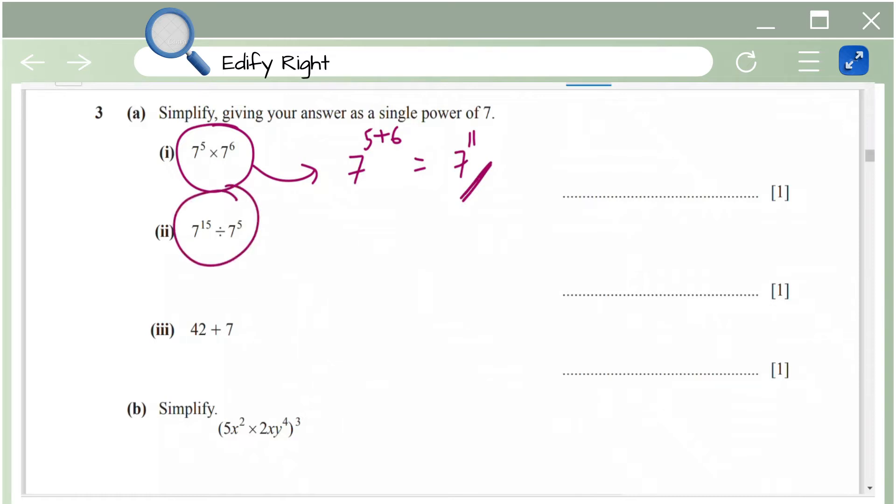Next part, 7 power 15 divided by 7 power 5. So here again we have the same basis but different powers and we have a division sign in between. So we're going to subtract the power. So it's 7 power 15 minus 5 which is 7 power 10.